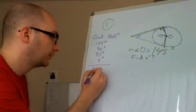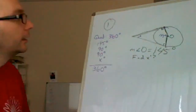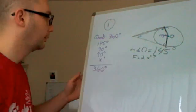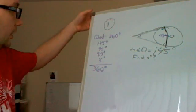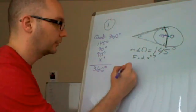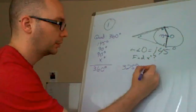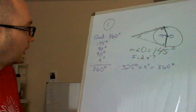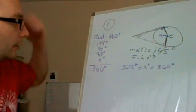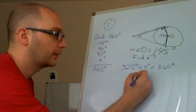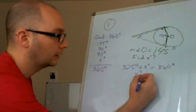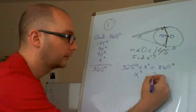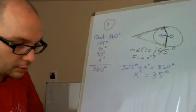We know angle O is 145 degrees. We know that these two right angles both are 90. And then we have x. So those have to total 360 degrees. We're going to get 180 plus 145, which is going to be 325 plus x is going to equal 360 degrees. Then I subtract 325 from both sides, and I get 35 degrees.